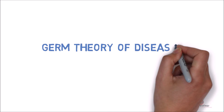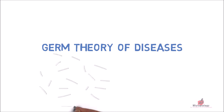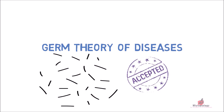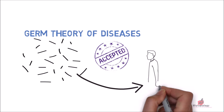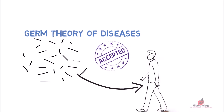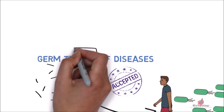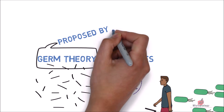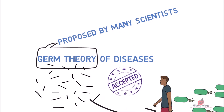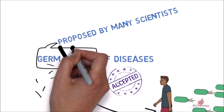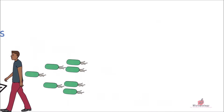The germ theory of diseases describes that diseases are caused by tiny germs. This is an accepted scientific theory for many diseases. These tiny germs invade human beings and animals, and their reproduction within the host causes diseases. Many scientists had proposed the germ theory even much before Pasteur's experiment, but all those proposals remained unrecognized.